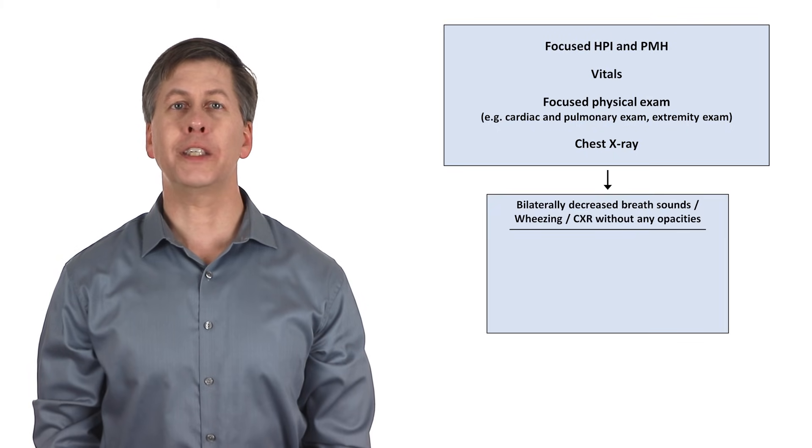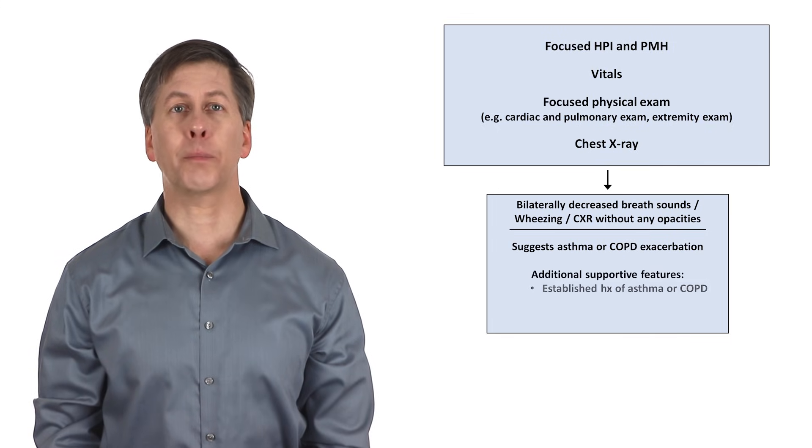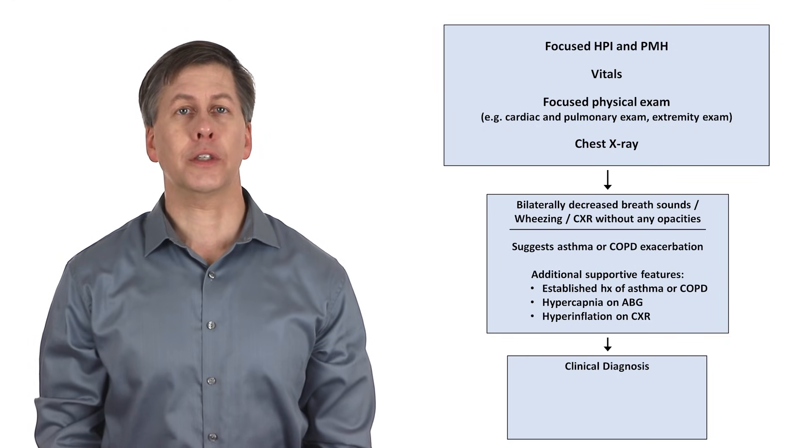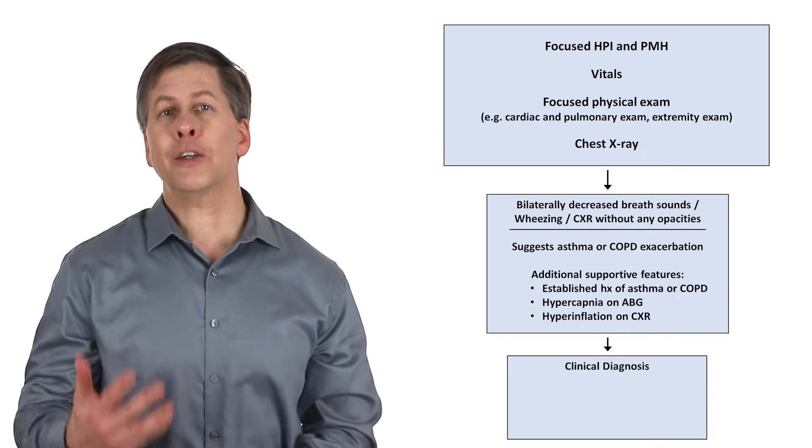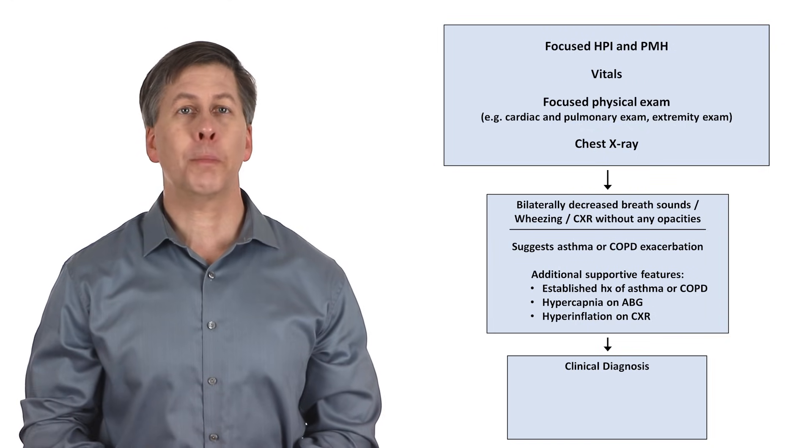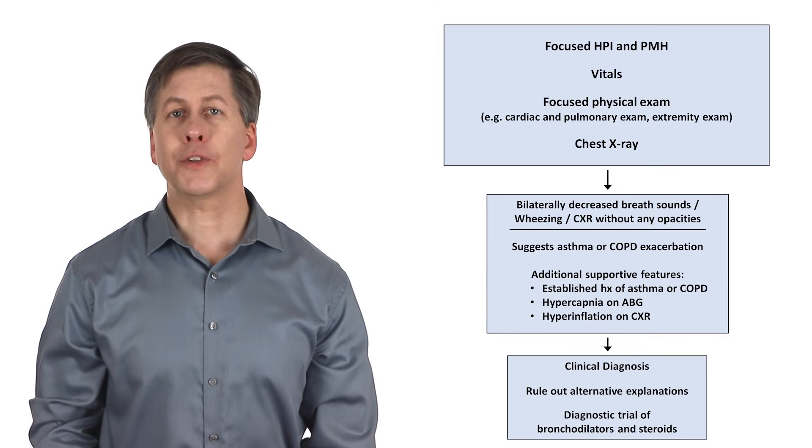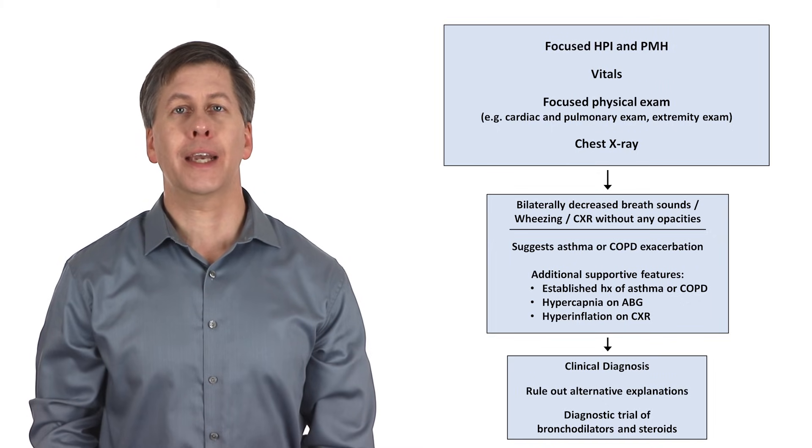Bilaterally decreased breath sounds, wheezing, and an x-ray without any opacities suggests the possibility of an asthma exacerbation, or particularly in heavy smokers, a COPD exacerbation, although COPD can occur in non-smokers as well. Additional supportive features include a previously established diagnosis of asthma or COPD, hypercapnia on ABG, and hyperinflation on the chest x-ray. Asthma and COPD exacerbations are so-called clinical diagnoses, which means there are no specific diagnostic tests that rule them in or out definitively, but rather a diagnosis is based upon a combination of history, exam, measures of peak expiratory flow for asthma specifically, and the exclusion of alternative explanations. Sometimes bronchodilators and steroids will be prescribed empirically as part of a diagnostic trial. However, a number of other causes of dyspnea can also respond to this therapy.